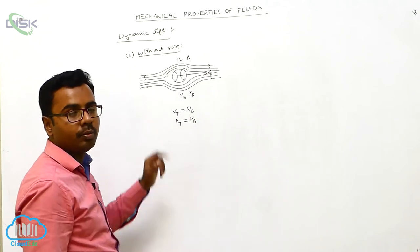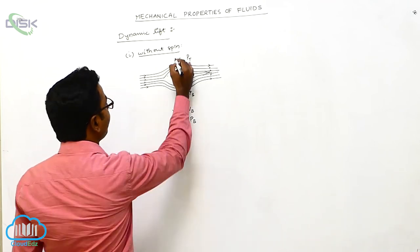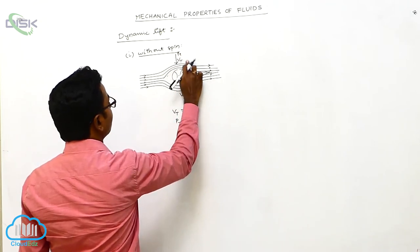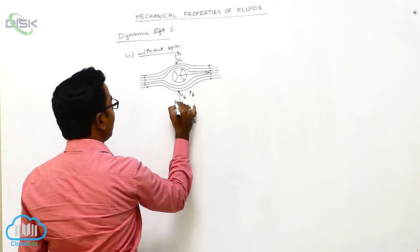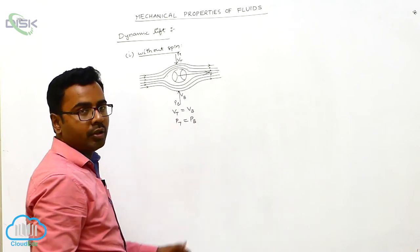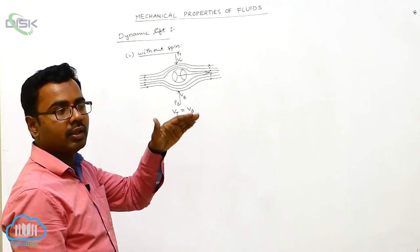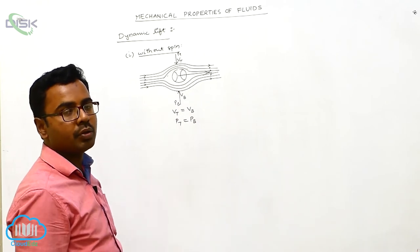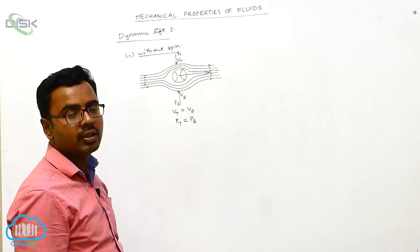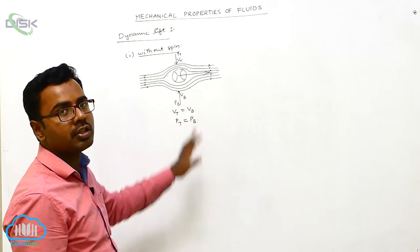Pt is the pressure on the top, Pb is the pressure on the bottom. Pressure Pt acts downward and Pb acts upward. Since equal pressure acts on the top and bottom surfaces, the two pressures cancel each other out, so the resultant upward force acting on the ball is zero when the ball is moving in air without spin.